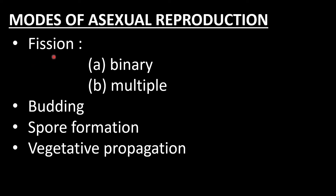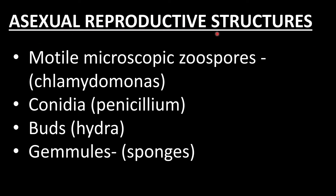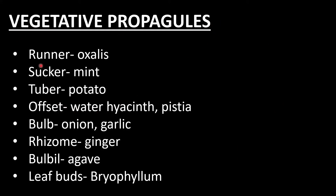The different modes of asexual reproduction are: fission (binary fission and multiple fission), budding, spore formation, and vegetative propagation. Asexual reproductive structures are generally motile microscopic zoospores, conidia observed in Penicillium, buds present in Hydra, and gemmules present in sponges.